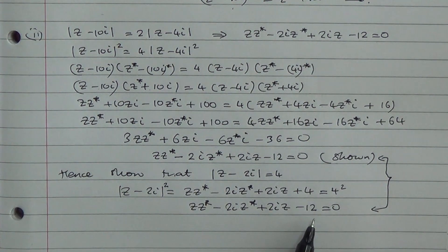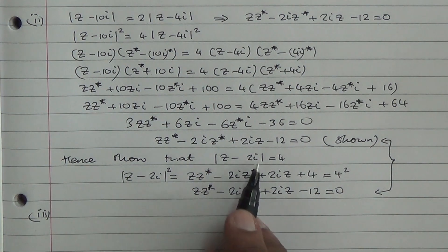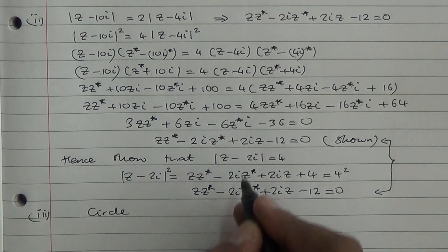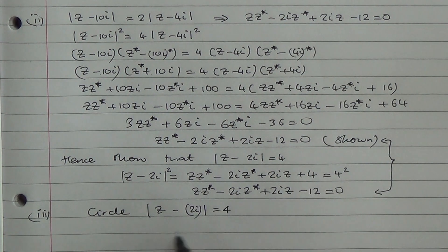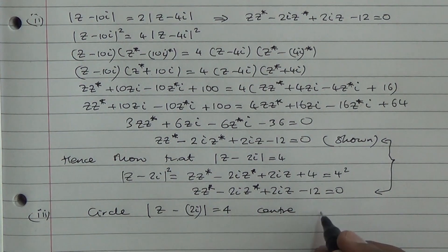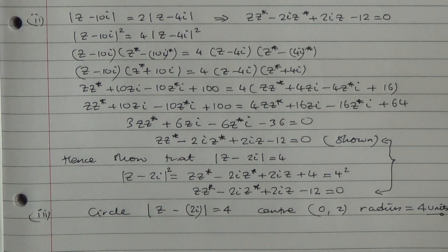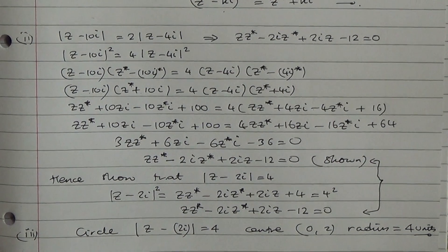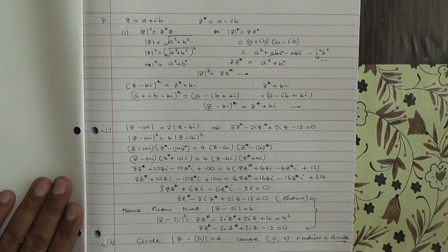Finally, we need to describe the set of points geometrically. This is a circle with center z minus 2i and radius 4 — so that's a circle with center at coordinates (0, 2) and radius 4 units. There we are for this question, taken from the June 2013 Advanced Level Mathematics Paper 3.